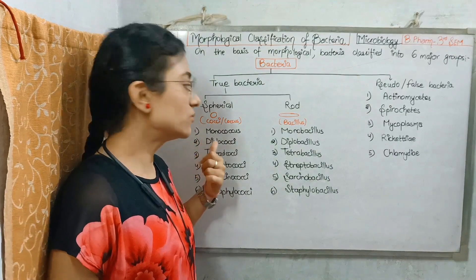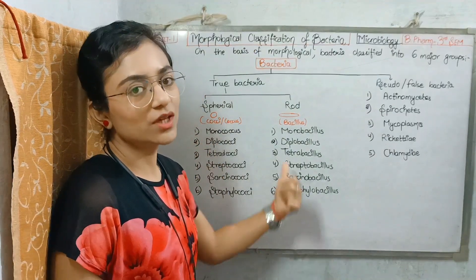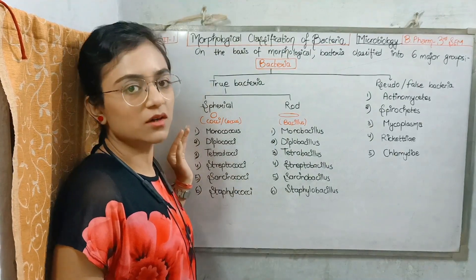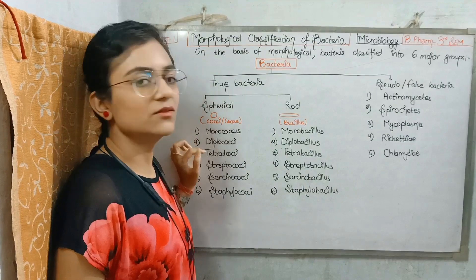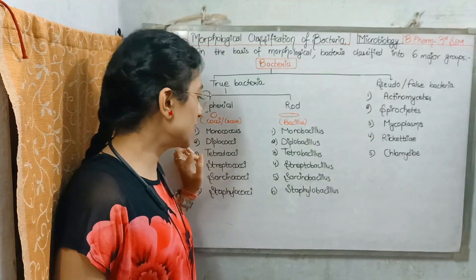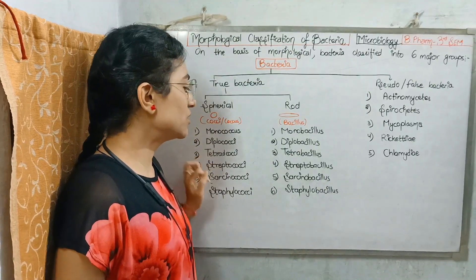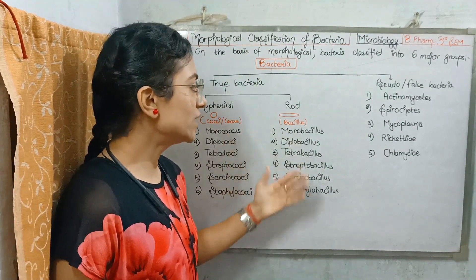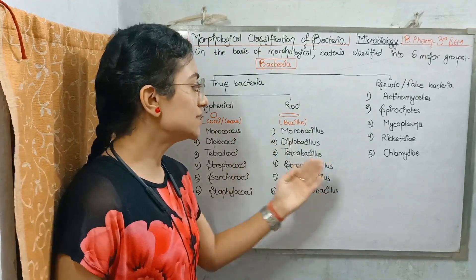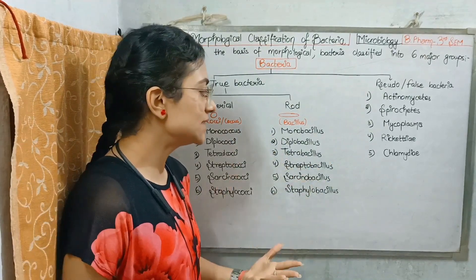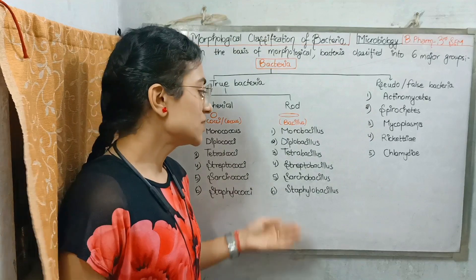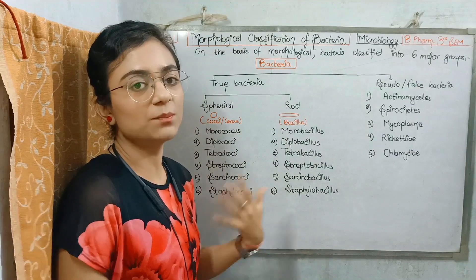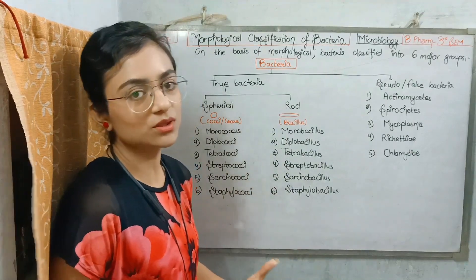Bacillus is further classified. There are three different types: Monobacillus, Diplobacillus, and others. We will learn about these types, their shapes, and see their examples.